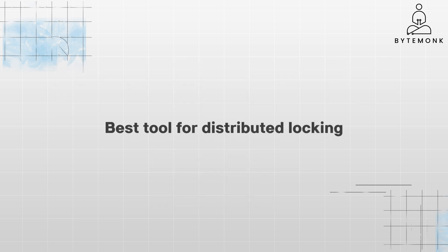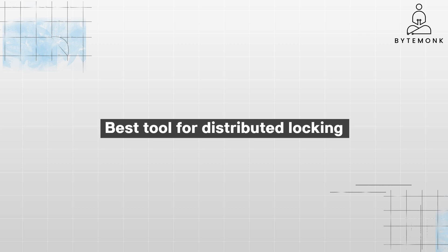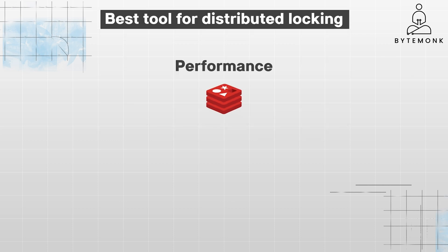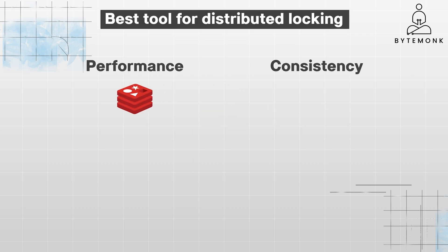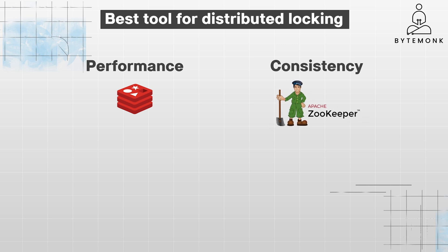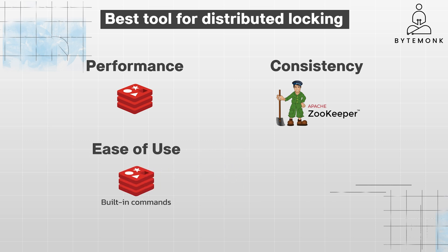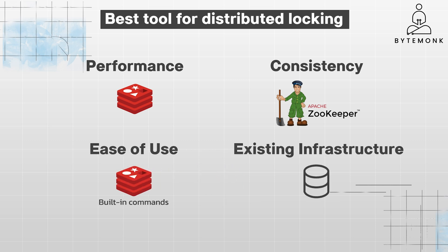The best tool for distributed locking depends on your specific requirements. If low latency is critical, Redis might be a better choice. If strong consistency guarantees are essential, ZooKeeper or etcd might be more suitable. If you need a simple solution, Redis's built-in commands might suffice. And if you are already using a particular database, leveraging its built-in locking mechanisms might be more convenient. Ultimately, there is no one-size-fits-all answer — it's crucial to evaluate the trade-offs and choose the tool that best aligns with your application needs and your team's expertise.